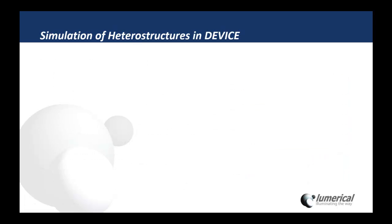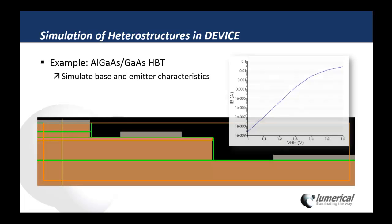We've introduced support for the simulation of heterostructures in the latest release of Device. By adding multiple material domains, you can now simulate the response of a heterojunction component, just as you would in a typical device simulation. In this example of an AlGaAs gallium arsenide heterojunction bipolar transistor, we've simulated the base characteristics of the structure and gotten the current versus voltage response.